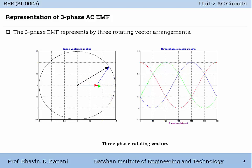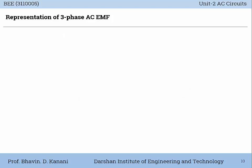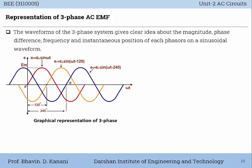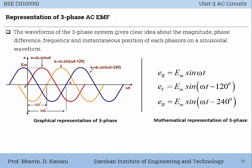The three-phase EMF is represented by three rotating vector arrangements. These rotating vectors are in motion in space, so they are also called space vectors. The waveform of the three-phase system gives a clear idea about the magnitude, phase difference, frequency, and instantaneous position of each phasor on the sinusoidal waveform.